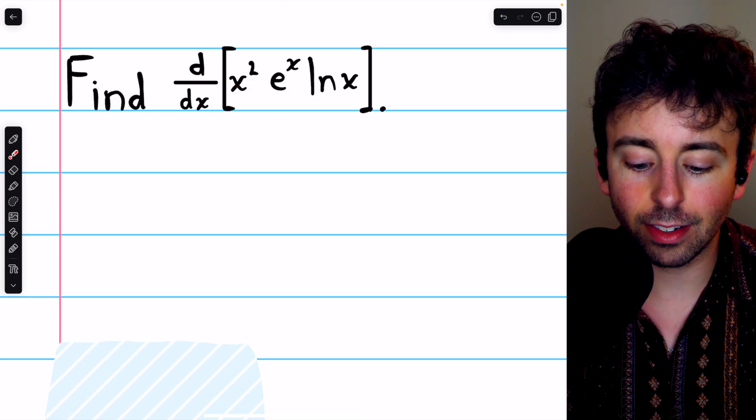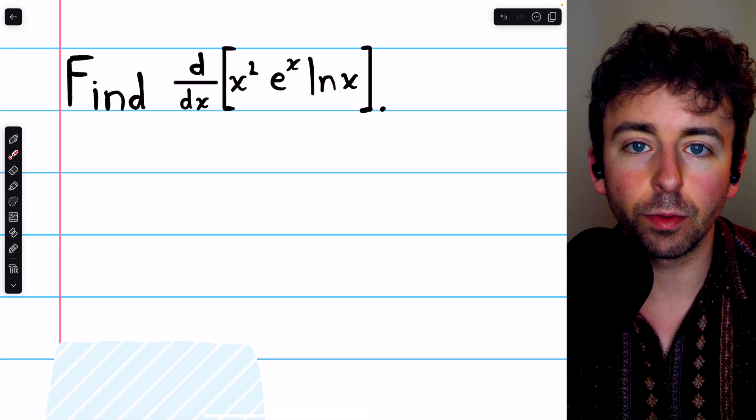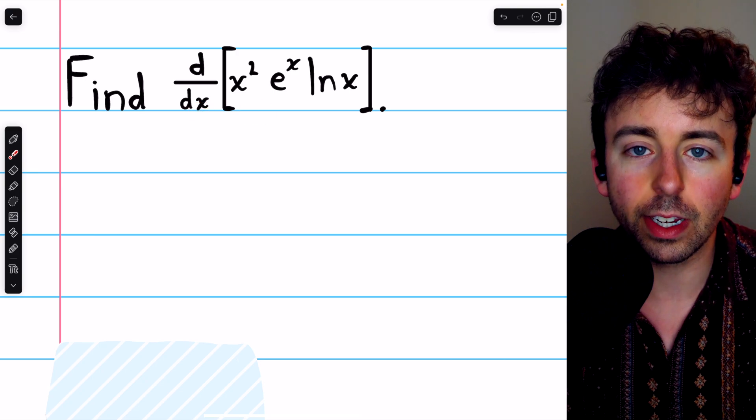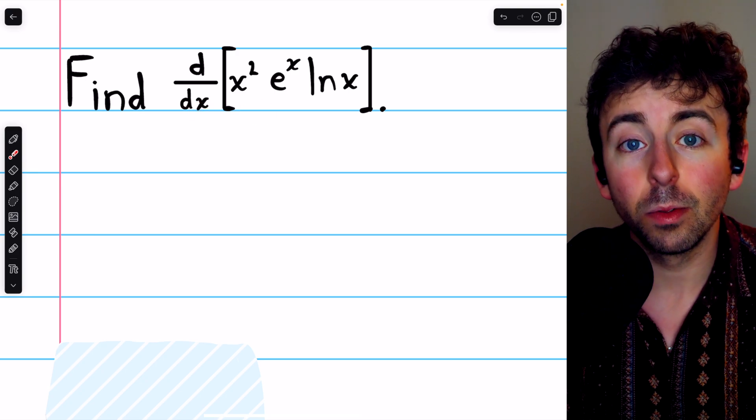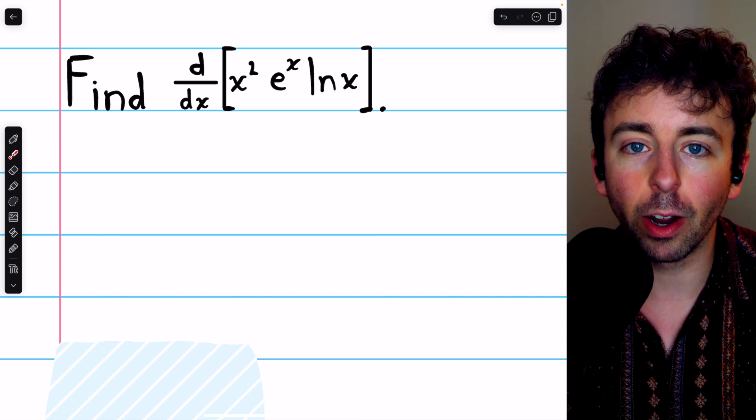x squared times e to the x times ln x is a product of functions. So to take its derivative, we need the product rule. But of course, this is actually a product of three functions.